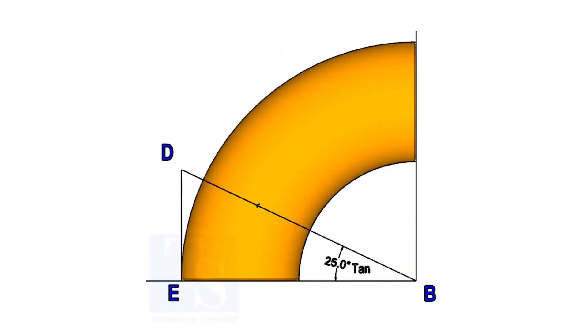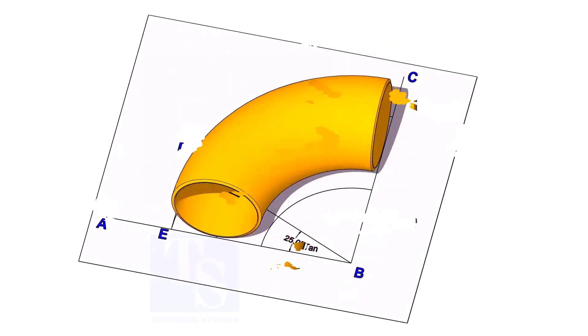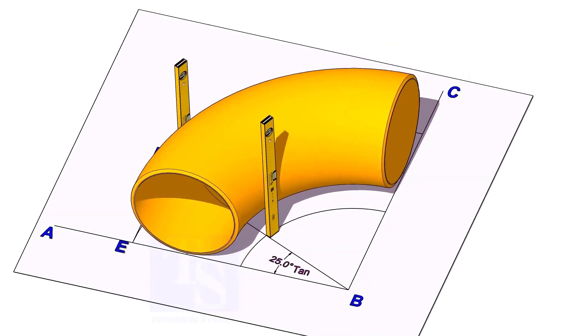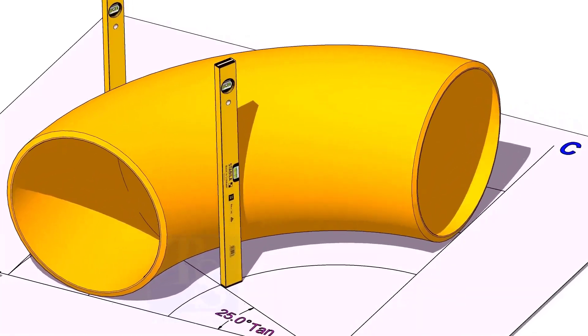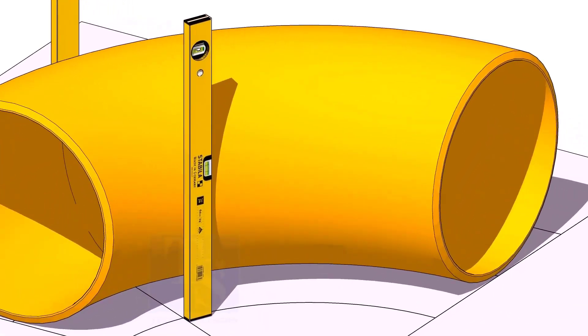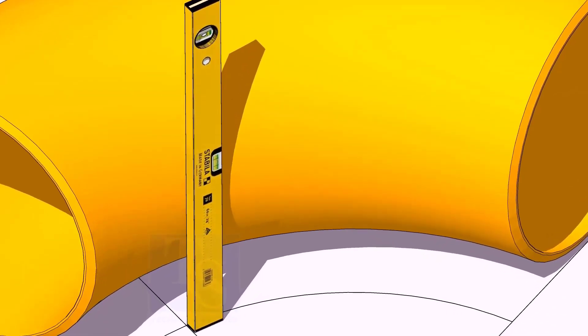Now, put the elbow exactly on the layout as shown. Hold two large level bottles at the edge of the elbow on both sides vertically. And strike a mark where the level bottle edge touches the elbow.